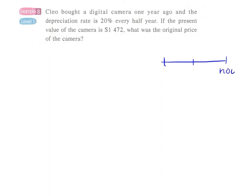This is now, this is a half a year away, this is one year ago. And since it depreciates by 20 percent every half year, in fact there will be two times of depreciation.